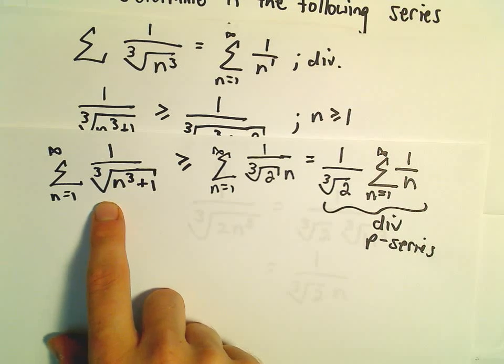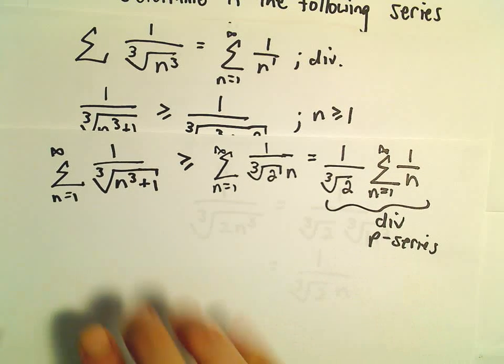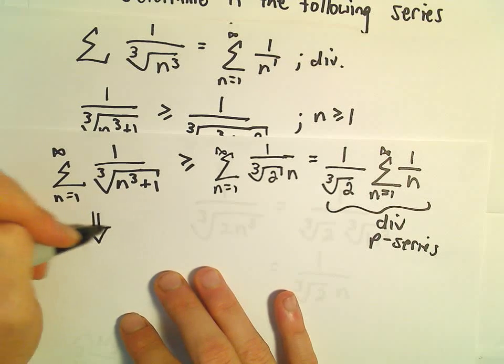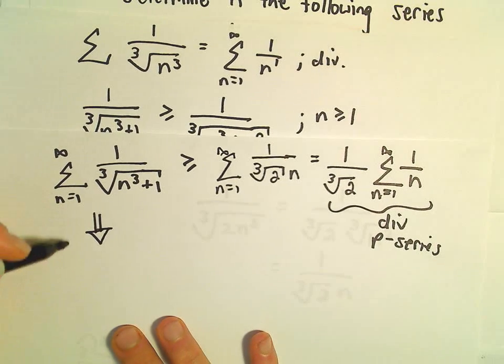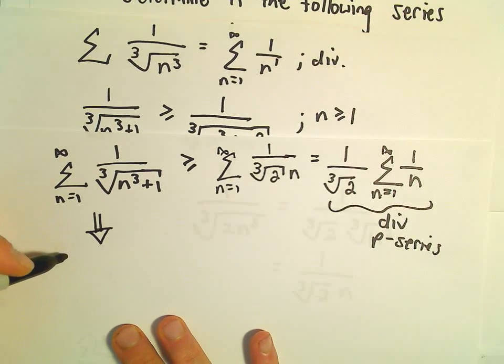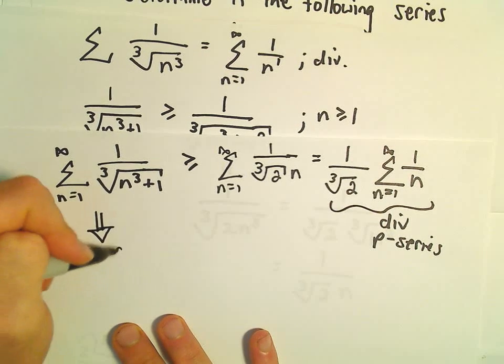is going to be greater than or equal to the value of that one. So, by the direct comparison test, our original series must also diverge.